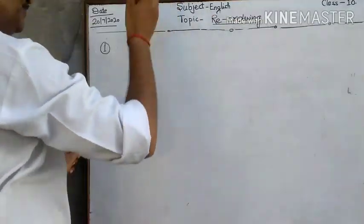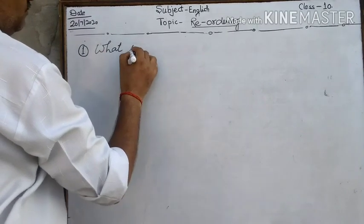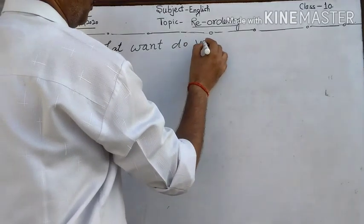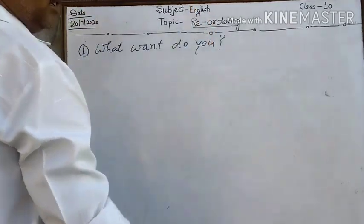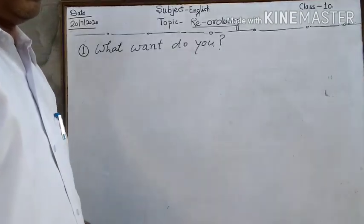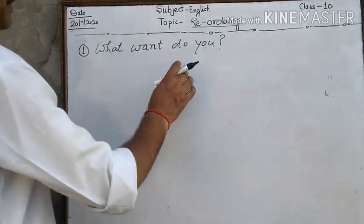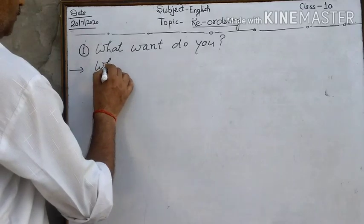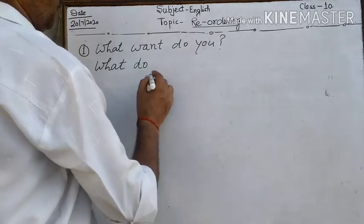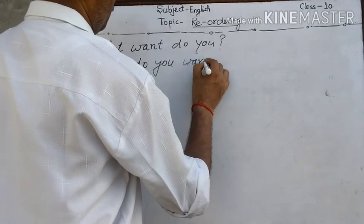Look at this. Students, this sentence is not in correct order. You have to reorder it. First of all, question word, after it subject, after it main verb, then other parts.